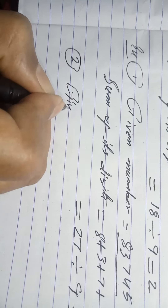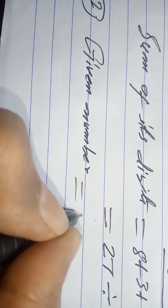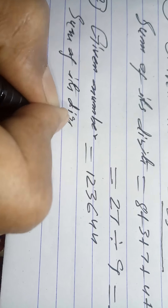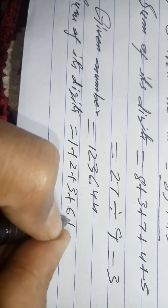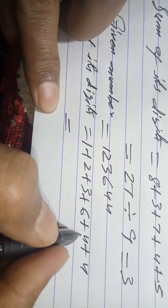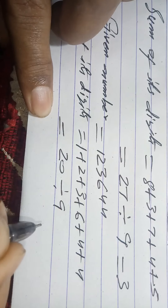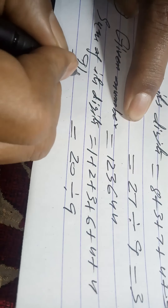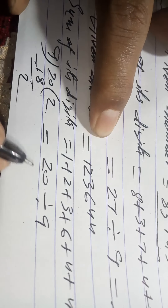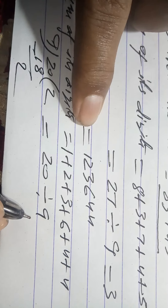Question 2. Given number 1,23,364. According to the rule, sum of its digits: 1 + 2 + 3 + 3 + 6 + 4. 1 + 2 = 3, 3 + 3 = 6, 6 + 3 = 9... wait, continuing: 1 + 2 + 3 + 6 + 4 = 16, total sum = 20. It has remainder 2, so 20 is not divisible by 9. So the given number is not divisible by 9.